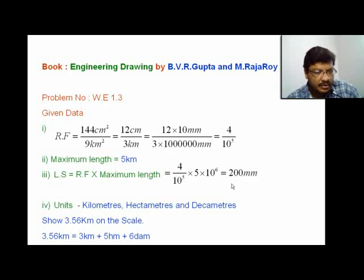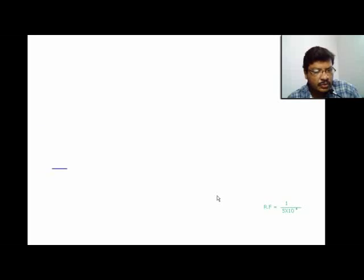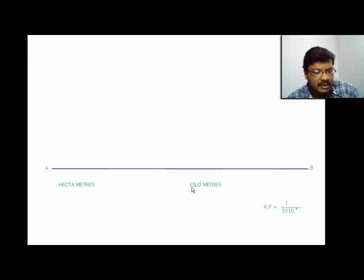Now, how to draw this. The length of the scale is 200 mm, so draw a line of 200 mm. Call this line AB. On the right-hand side you will get kilometers, and on the left-hand side you will get hectometers. Divide line AB into equal parts — to find the number of parts, observe the maximum unit (kilometers) and the maximum length of 5 km. Dividing into 5 parts makes each part 1 kilometer.